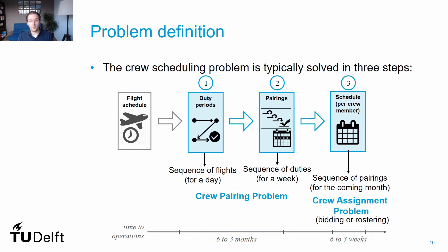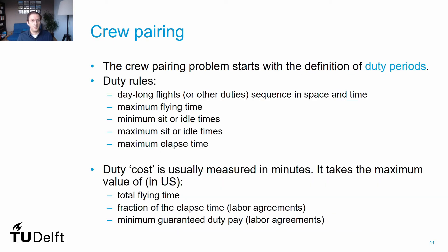In Europe, these preferences are typically declared in flight or leave requests filed before the rostering process finishes. While in America, airlines follow a process of bidding, in which each crew member can declare what are the pairings they would prefer. Let's discuss in more detail the two main problems: the crew pairing and the crew assignment problem, starting with the crew pairing and the creation of duty periods.